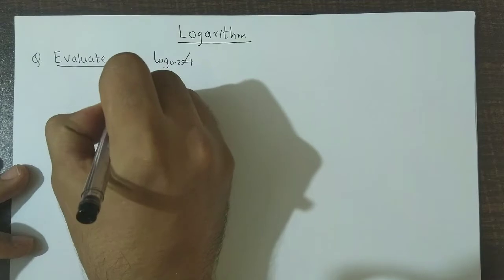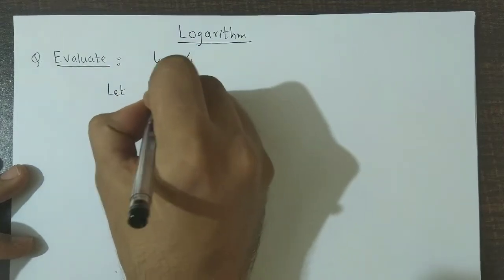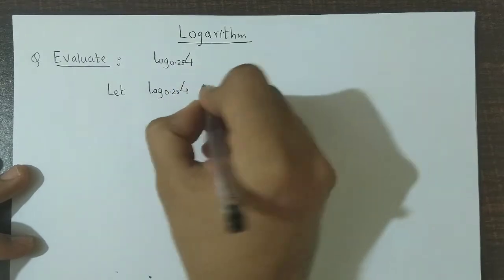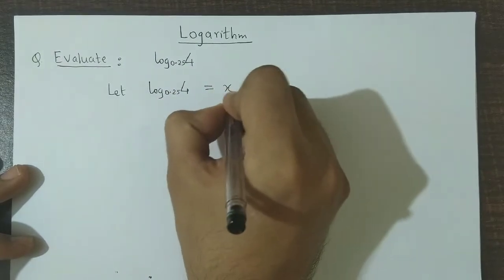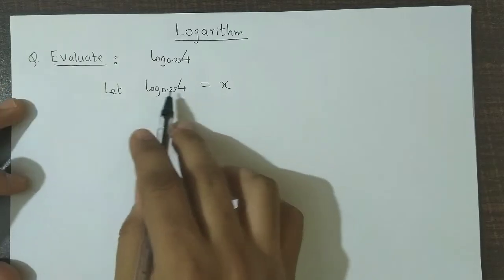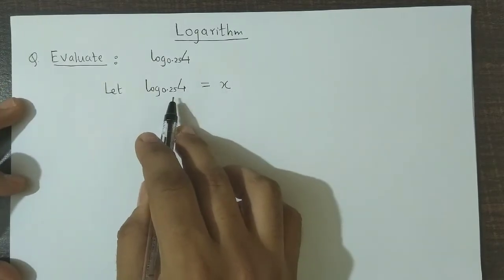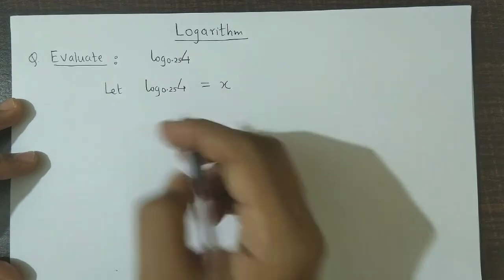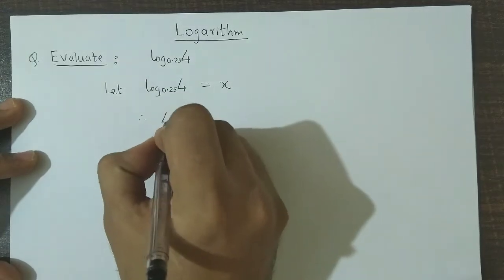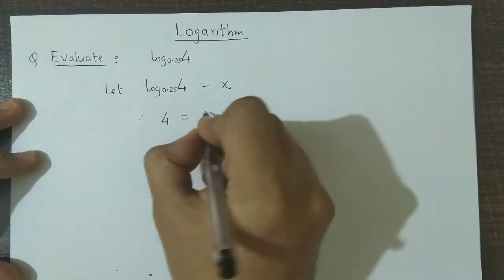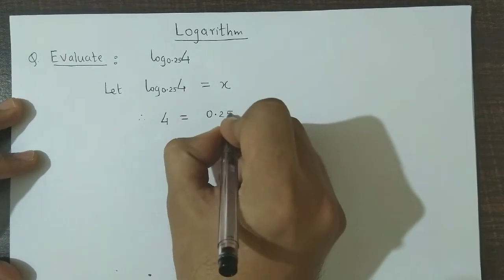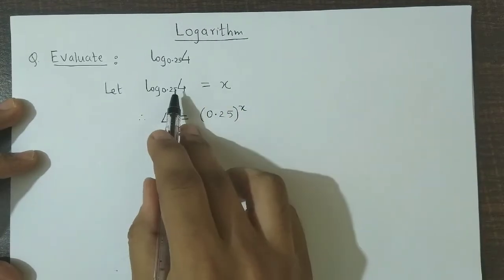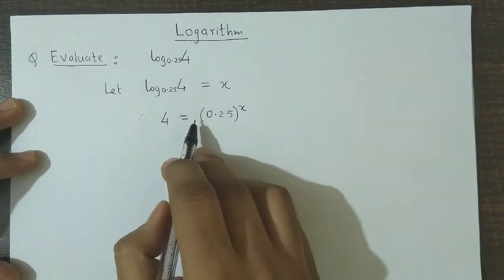So let log 4 to the base 0.25 be equal to x. We now convert this log form into its corresponding exponential form. For that we transfer this base onto the right hand side and we obtain 4 is equal to 0.25 raised to x. So we have converted the log form into the exponential form.